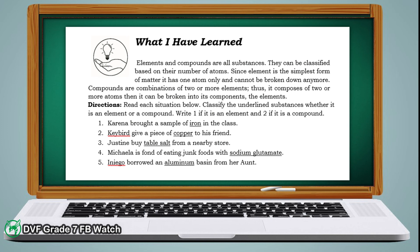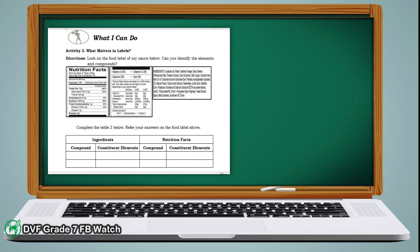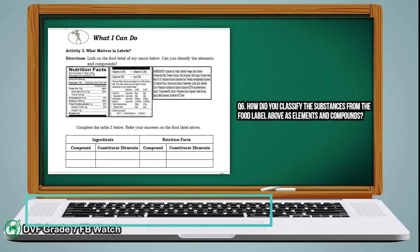Next is 'What I Have Learned.' Classify the underlined substances whether each is an element or a compound. In your paper, just write 1 if it is an element and 2 if it is a compound. Let's proceed to 'What I Can Do.' Complete the table based on your answers from the given nutrition facts and ingredients of the food label of soy sauce. Then answer question number 6: how did you classify the substances from the food label above as elements and compounds?